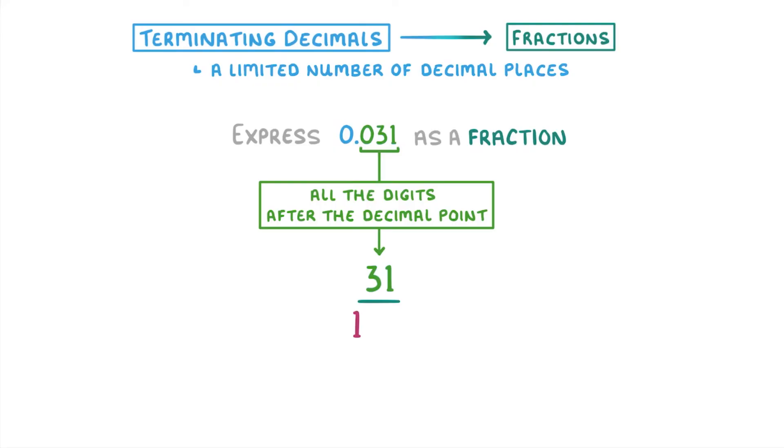0.031 has three digits after the decimal point. The 0, the 3, and the 1. So we're going to have to add three zeros to the 1 in our denominator, giving us 31 over 1,000 as our answer. And we're done.